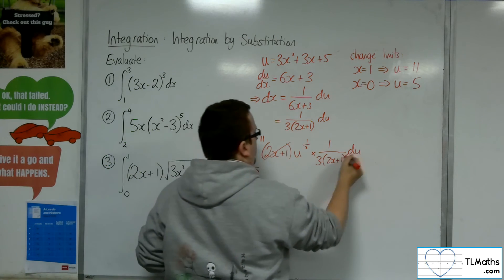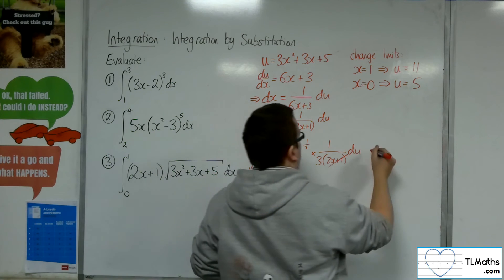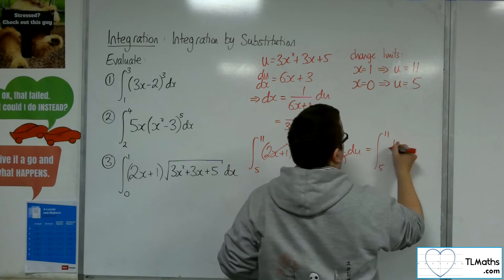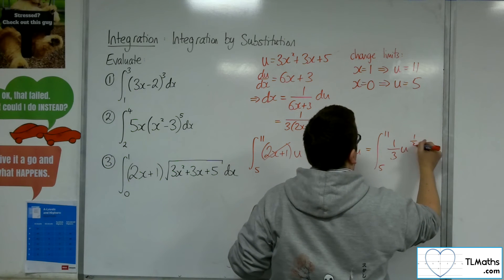Now the 2x plus 1s will cancel. So I'm going to be left with the integral between 5 and 11 of a third u to the half du.